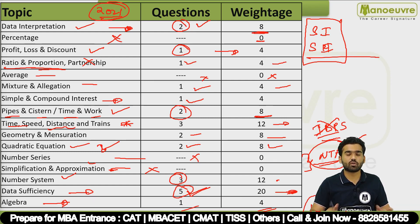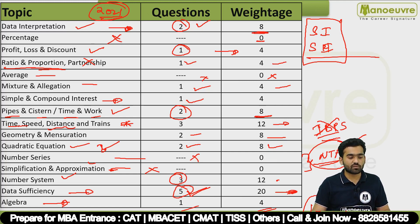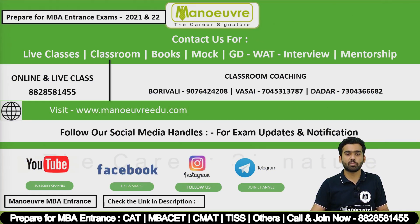Algebra had 1 question for 4 marks. That completes the total of 100 marks across 25 questions. This is your complete breakup of all topics versus weightage — go through it and prepare accordingly for your CMAT examination.